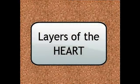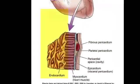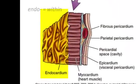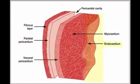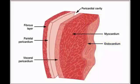So the layers of the heart — the heart has a couple of different layers. The innermost layer, made of epithelial cells, is the endocardium. Remember, endo means within. So the endocardium is the inner layer; it also lines the valves and the vessels.